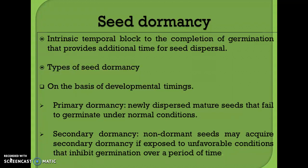In primary dormancy, newly dispersed mature seeds fail to germinate under normal conditions. This may be due to the presence of abscisic acid, and that state is known as primary dormancy. In secondary dormancy, after losing primary dormancy, non-dormant seeds may enter secondary dormancy if exposed to unfavorable conditions that inhibit germination over a period of time.